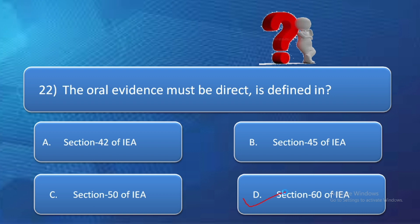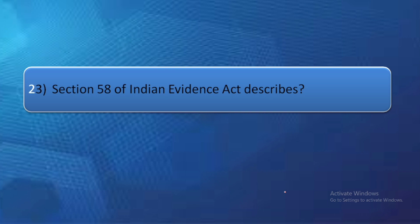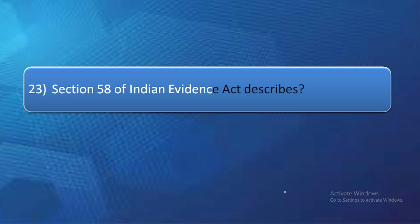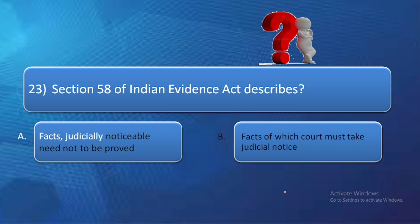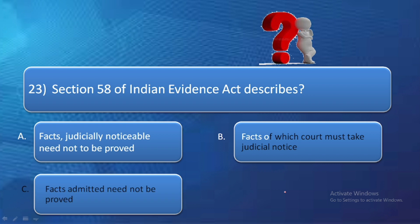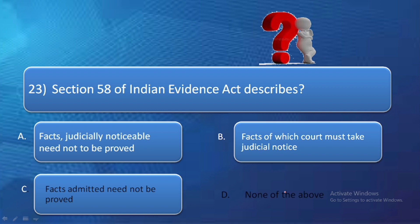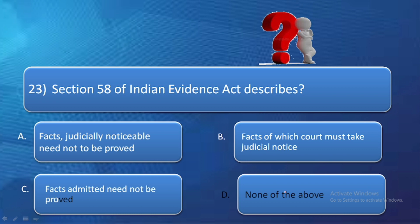Next question: Section 58 of the Indian Evidence Act describes — option A: facts judicially noticeable need not be proved, option B: facts of which court must take judicial notice, option C: facts admitted need not be proved. Section 58 of the Indian Evidence Act deals with facts admitted need not be proved — जो facts admitted होते हैं उनको prove करने की ज़रूरत नहीं होती. So the correct answer is option C.